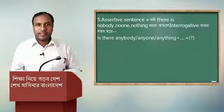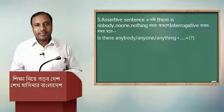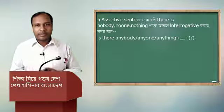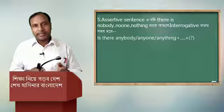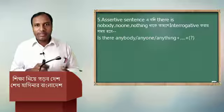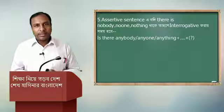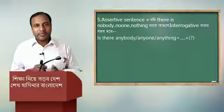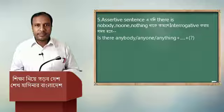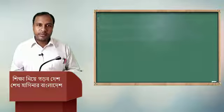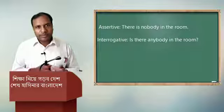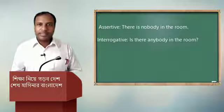Point five: if an assertive sentence has 'there is nobody', 'no one', or 'nothing', then when making it interrogative, it becomes: 'Is there anybody / anyone / or anything' + ... + question mark. For example: 'There is nobody in the room.' The interrogative sentence will be: 'Is there anybody in the room?'